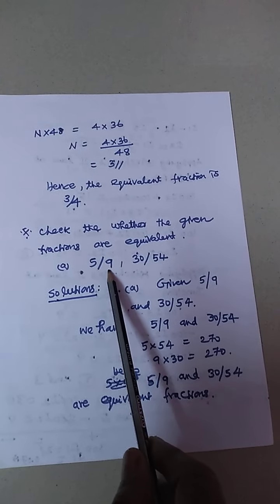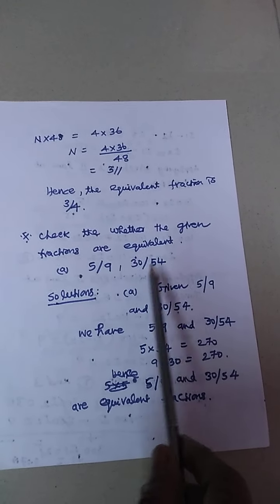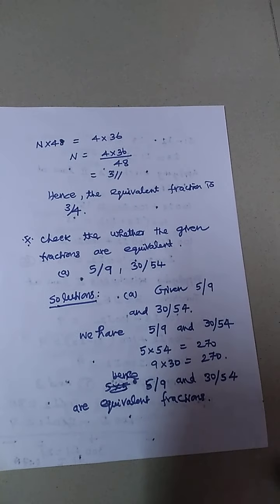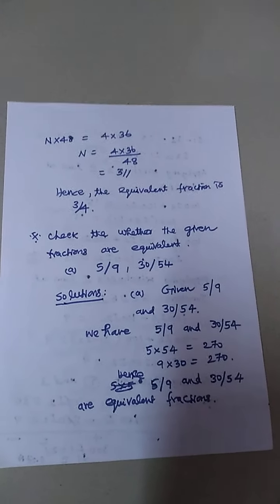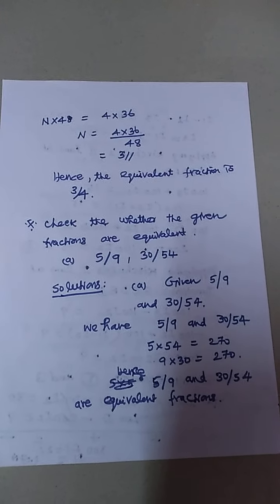Since 5 into 54 equals 270 and 9 into 30 equals 270, and 270 equals 270, therefore 5/9 and 30/54 are equivalent fractions.